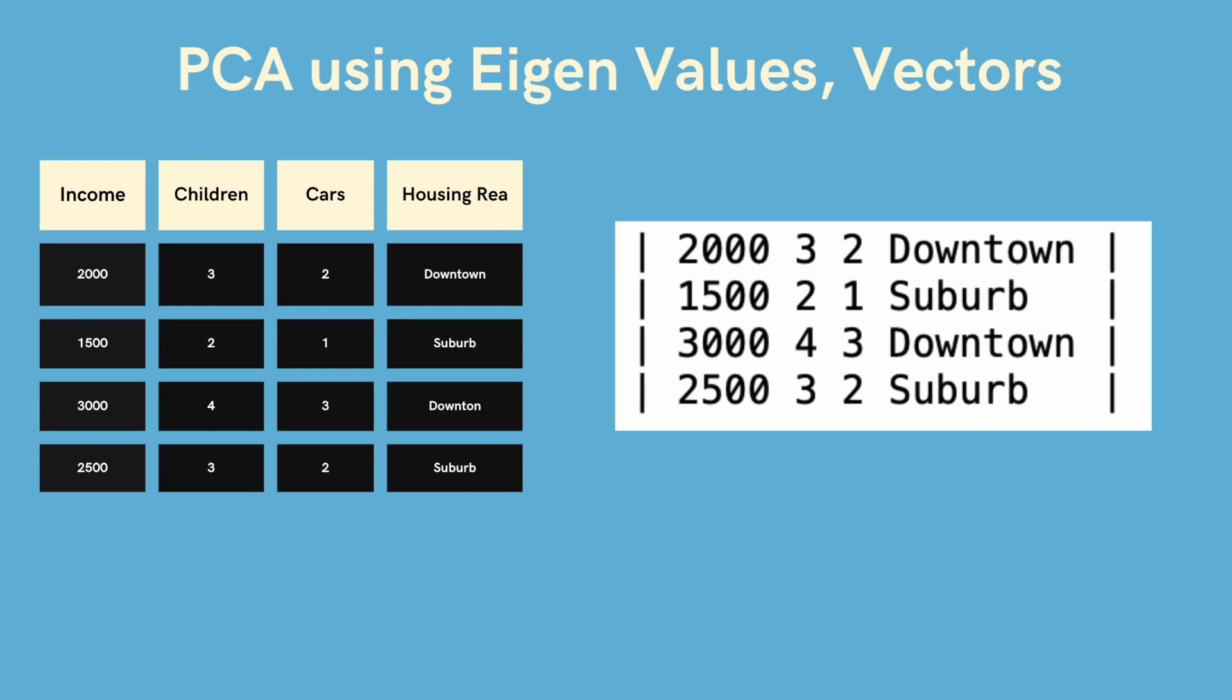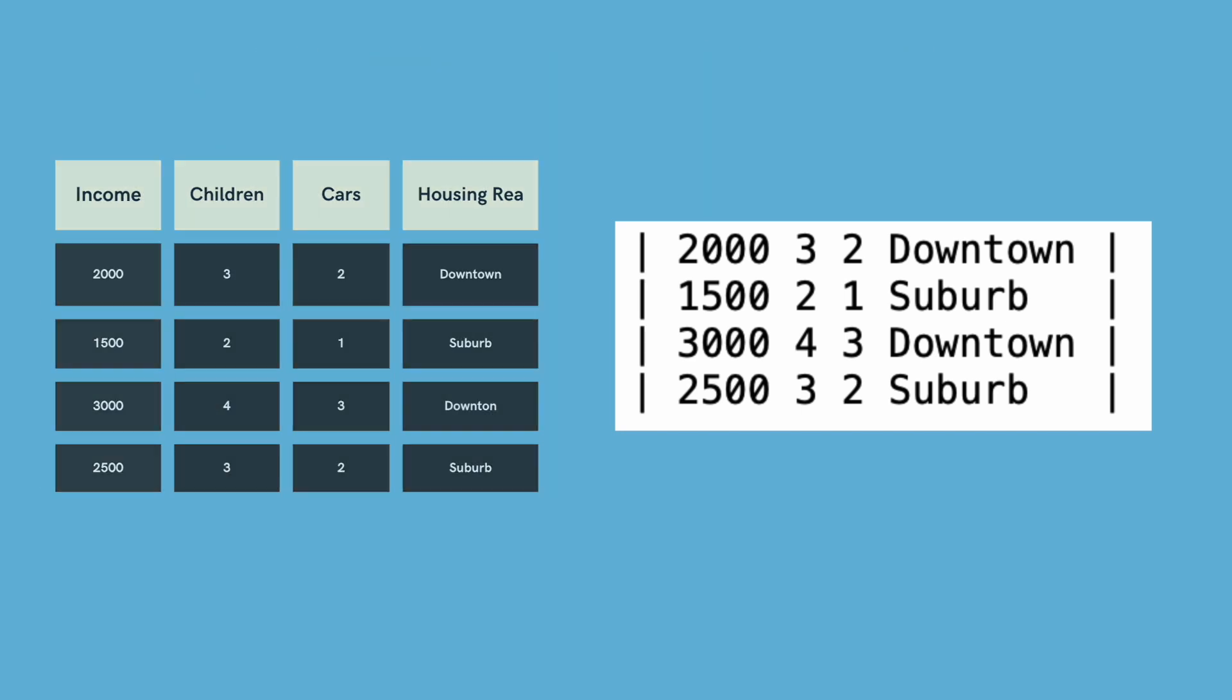Now we'll take an example over here. Let's say this is a data set where income, children, cars and housing area are the features and it can be represented in a matrix in this form and we'll try and use PCA and eigenvalues to reduce the number of dimensions.